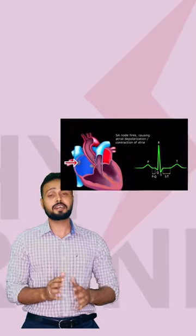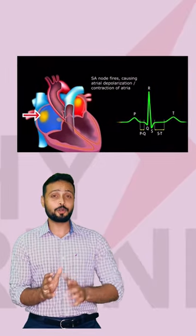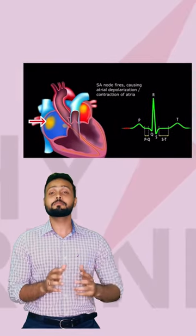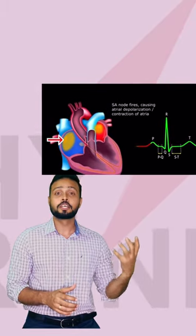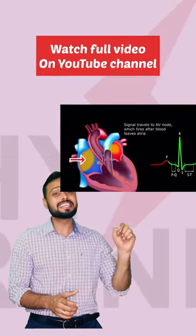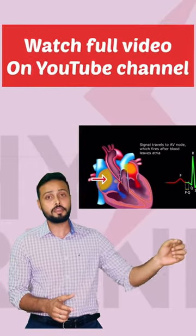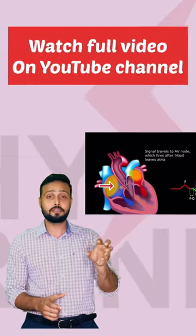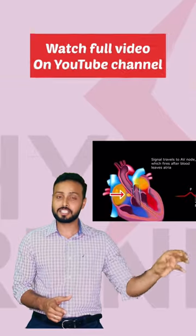So let's start with the P wave. The P wave signifies atrial depolarization. Depolarization means the emptying of the chamber. So whenever the atrium is getting emptied, it is represented by the P wave. So the P wave is the significance of atrial depolarization.